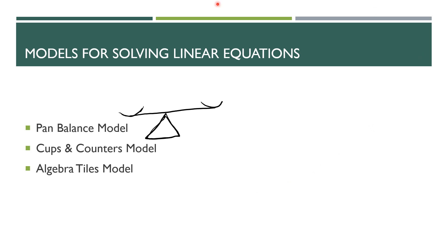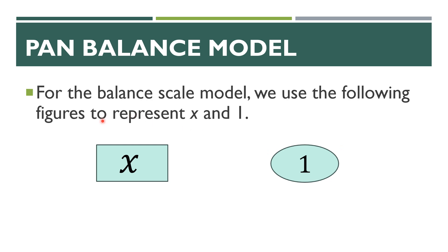So three models for solving linear equations. For the pan balance model, we use the following figures to represent X and one. In my examples, I'm going to use a rectangle to represent X and an oval to represent a one. You could use different shapes — I just picked these because they are easy to draw and recognizable for young students.